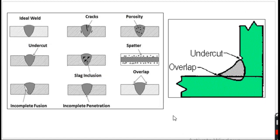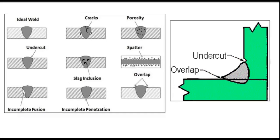A summary slide shows all defect types: ideal weld, cracks, porosity, undercut, slag inclusion, spatter — which is a major issue in SMAW processes and can be reduced by regulating bead-to-plate distance, current, and weld speed — incomplete fusion, incomplete penetration, and overlap for both butt and fillet joints. This completes the topic of weld defects.